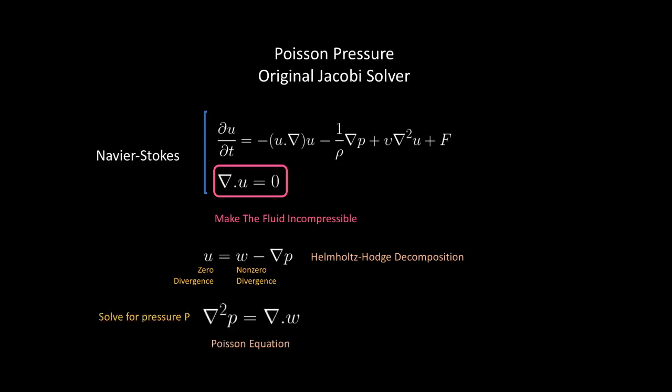To solve this, first we need to solve for the pressure using the Poisson equation where w is a divergent velocity.